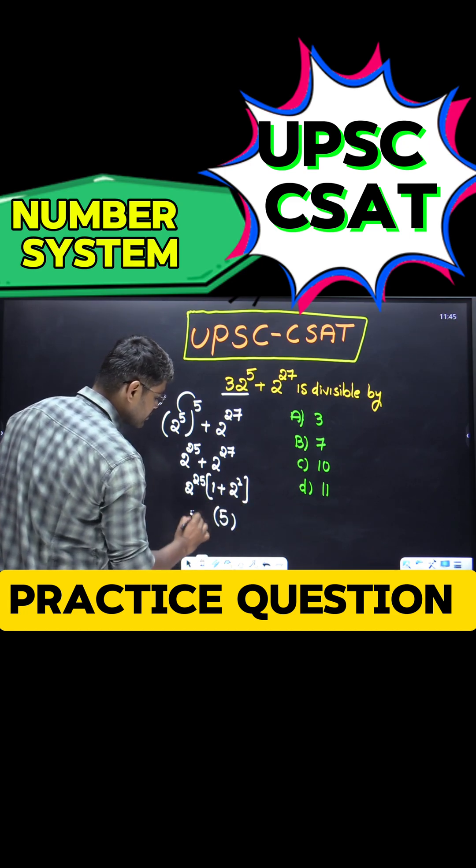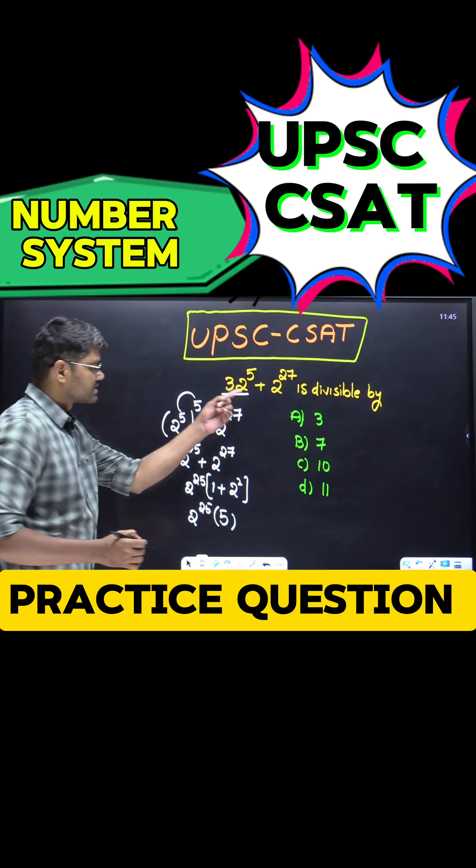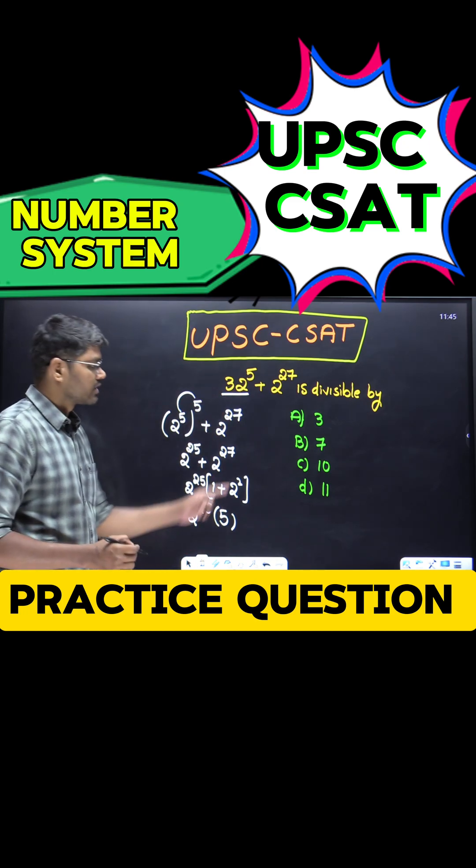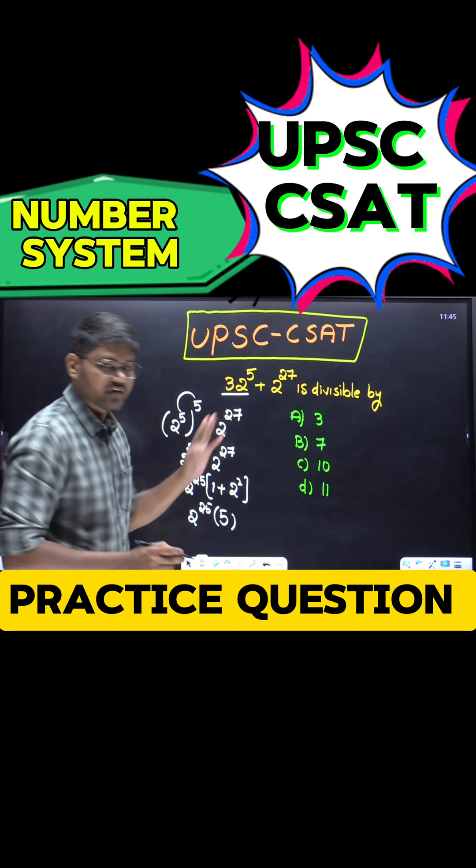5 × 2^25. So this number is divisible by 5. Let us check the options. 5 is there.